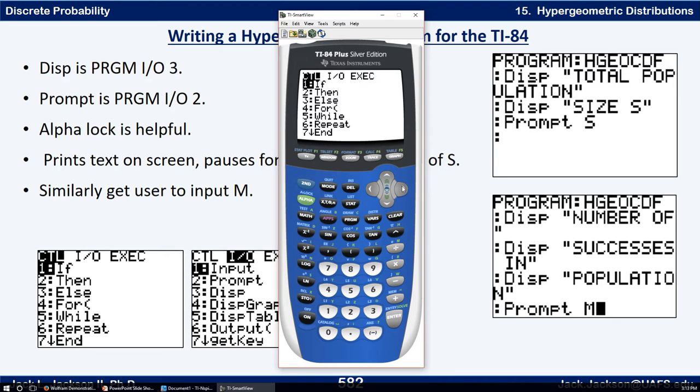Okay, now then we're going to prompt us. We push prompt S. Now how do I get to prompt? We go to program IO. Display was number three. Prompt is number two. So I can just type two or I can arrow down to two and then hit enter.